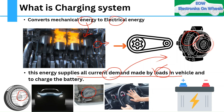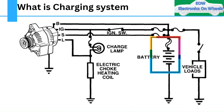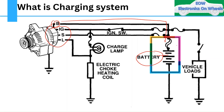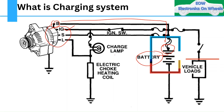One important point before moving forward: we are talking about the charging system in ICE (internal combustion engine) vehicles. In electric vehicles, the charging system is totally different. This is the block diagram of the charging system, where the alternator is connected to the battery, to the different vehicle loads, and to the charging lamp through the ignition switch wire.